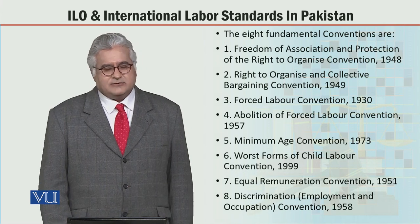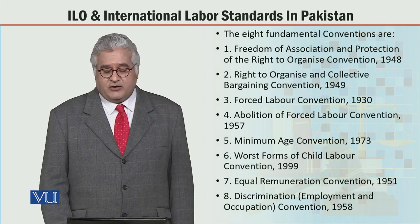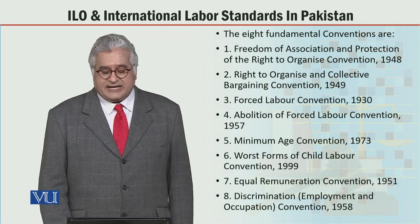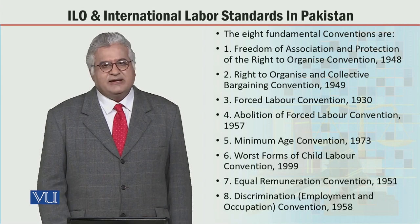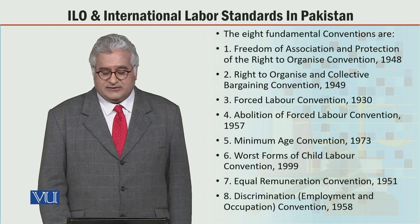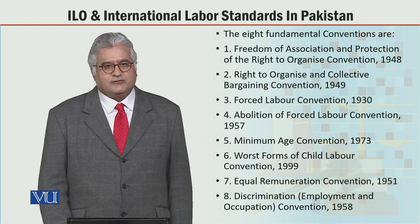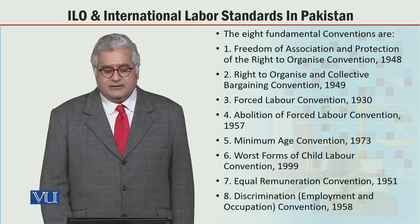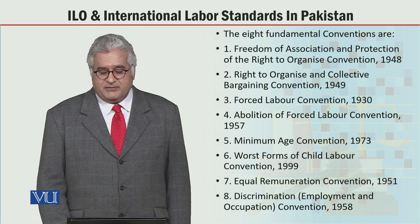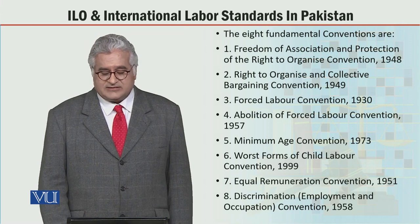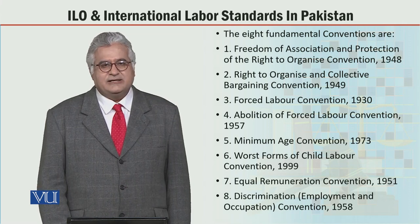The first convention is the Freedom of Association and Protection of the Right to Organize Convention. Second is the Right to Organize and Collective Bargaining Convention. Third is the Forced Labor Convention. Fourth is the Abolition of Forced Labor Convention, 1957. Fifth is the Minimum Age Convention, 1973. Sixth is the Worst Forms of Child Labor Convention, 1999.